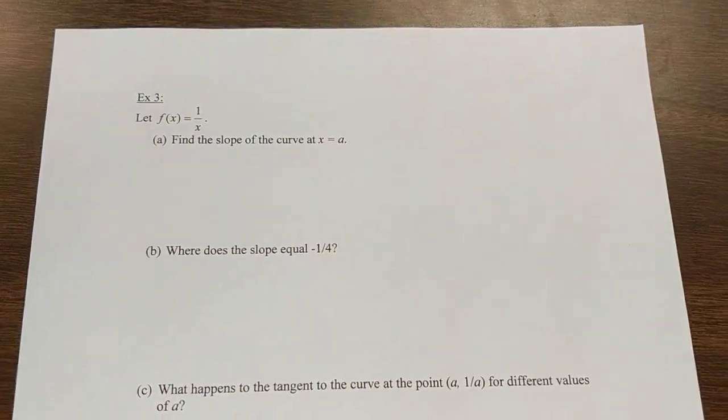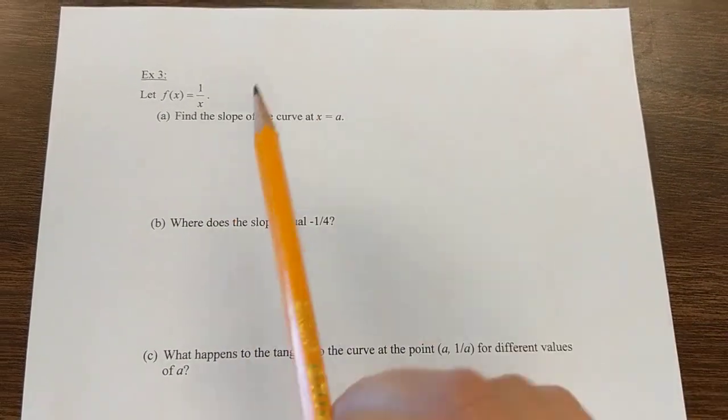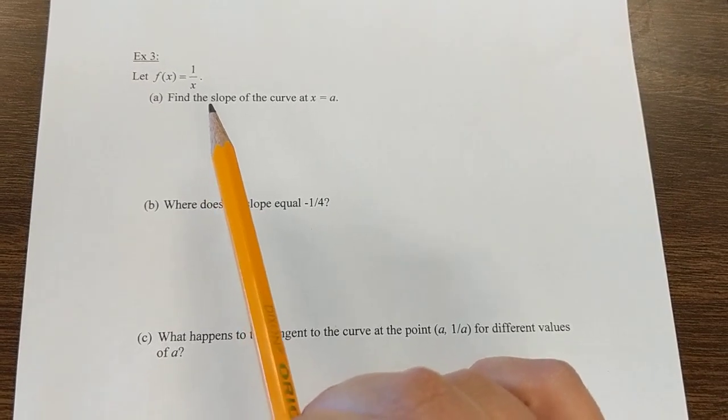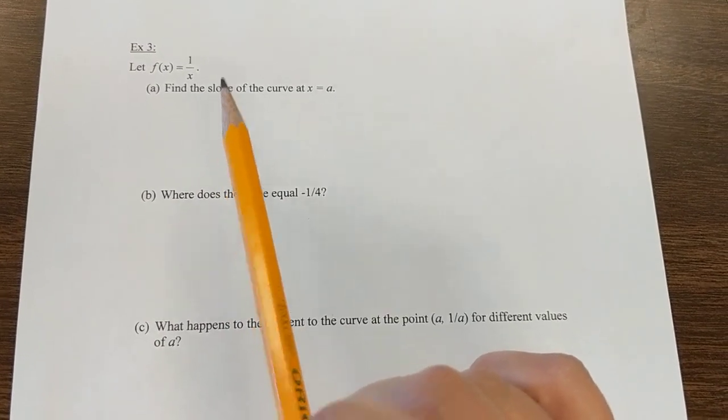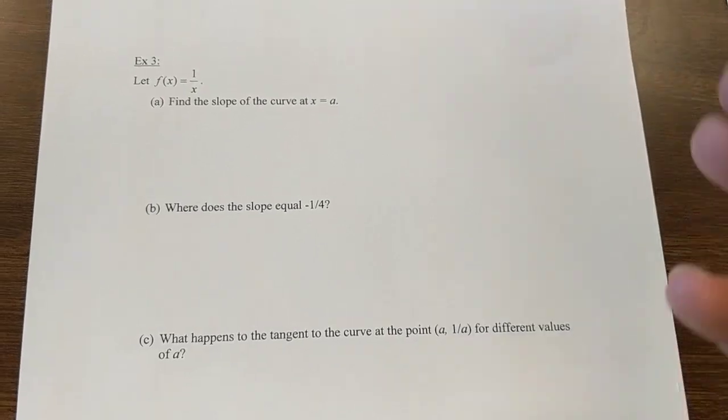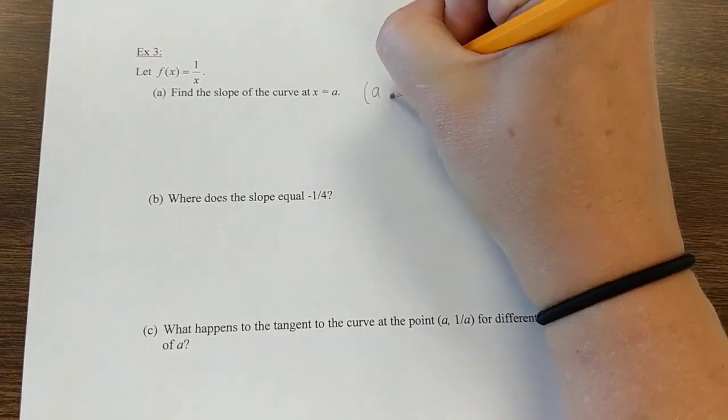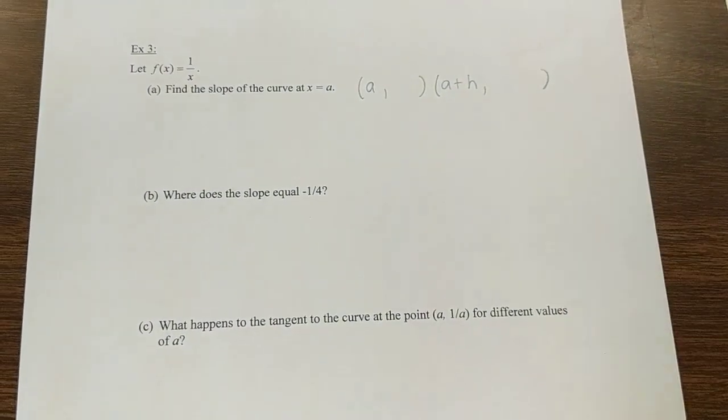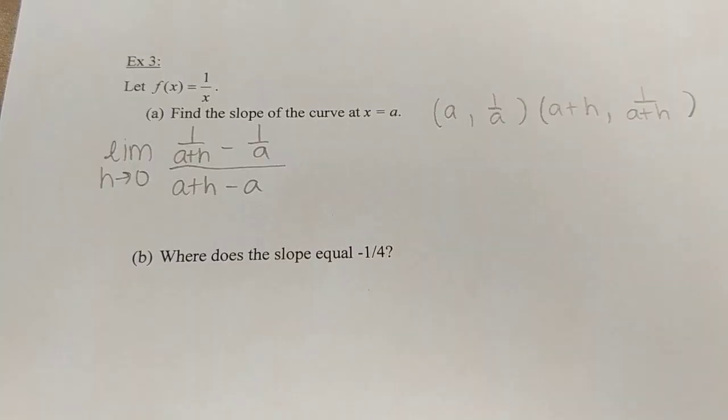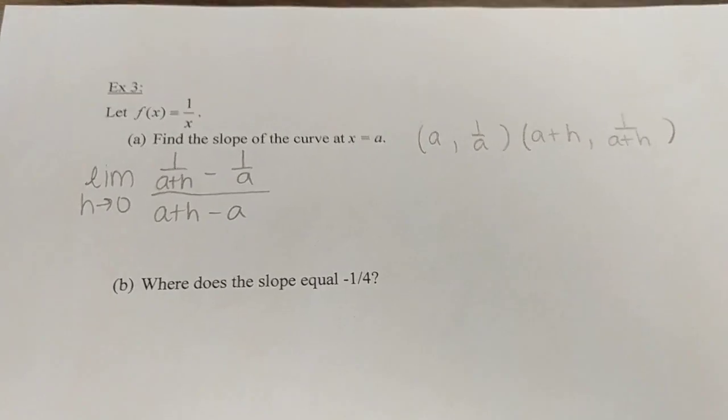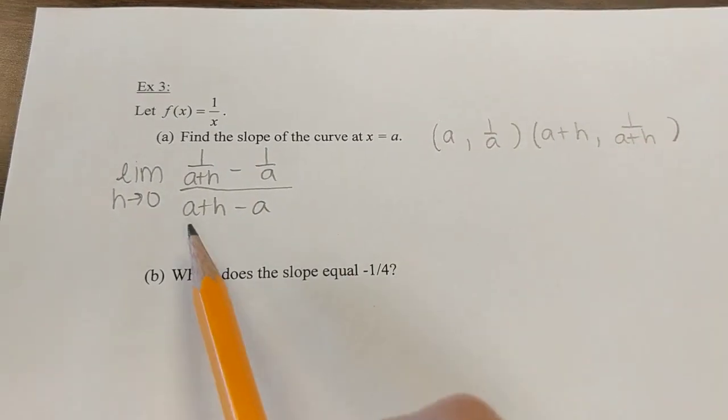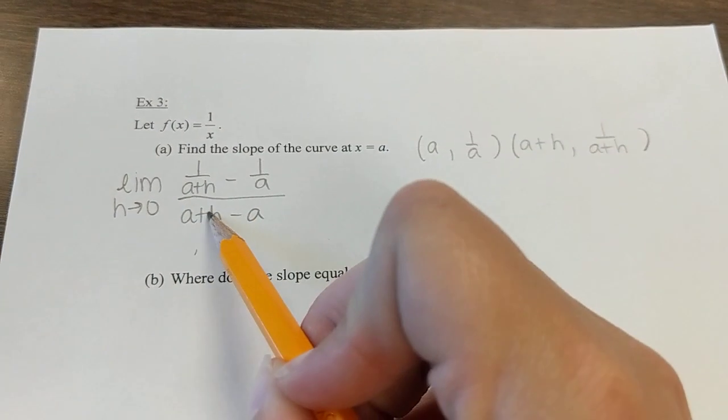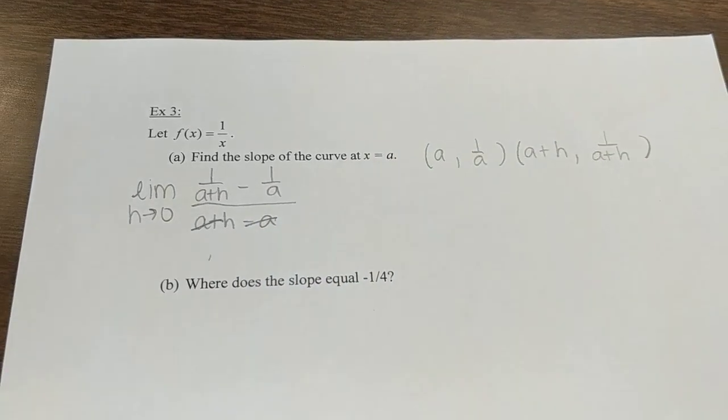The top of the next page - they want you to do the same thing for this equation, 1 over x. It's going to take some common denominator work. First thing I'd like you to do is set the problem up with the limit. Write your two ordered pairs: the first one is at a, and the second one is at a plus h. I've got my two ordered pairs, and then I wrote my limit statement with y2 minus y1 over x2 minus x1. Again, I can make a note that these canceled each other out.